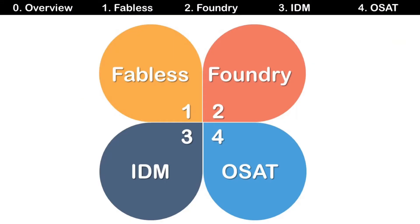There are four areas in the semiconductor industry: Fabless, Foundry, IDM, and OSAT. Before explaining these, you need to know about the semiconductor manufacturing process flow.